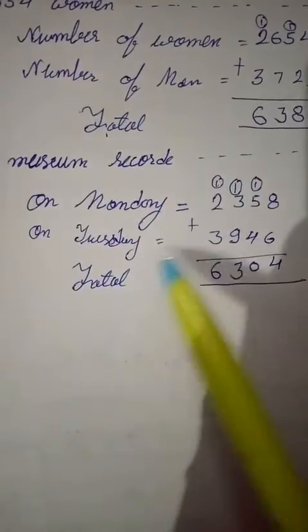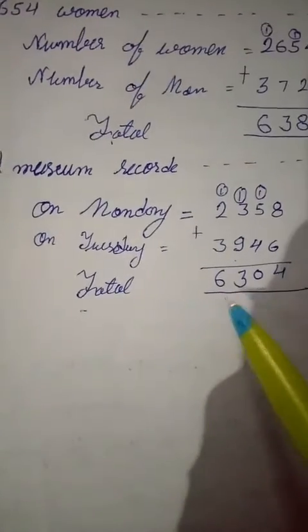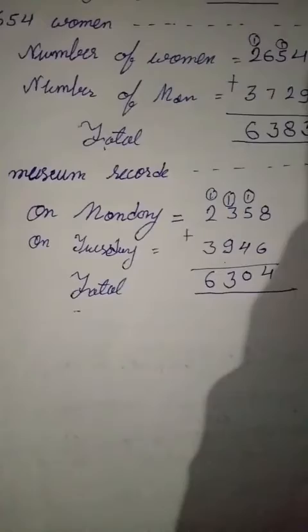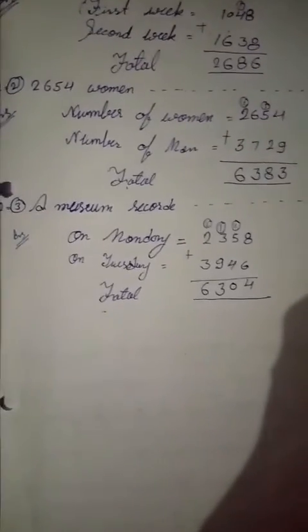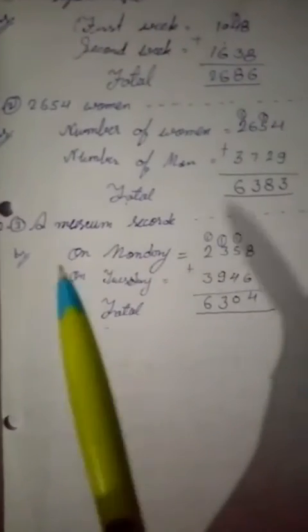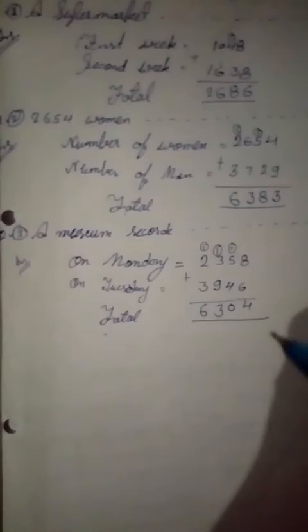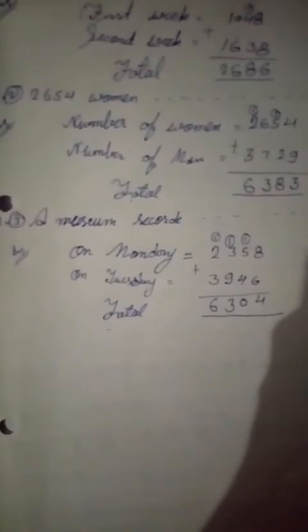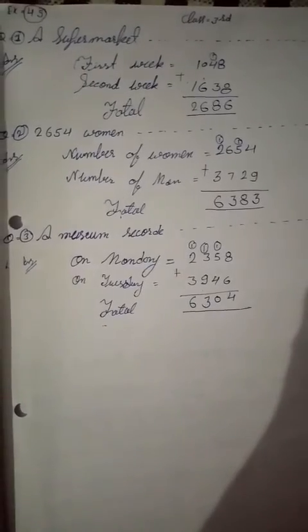Total visitors is 6,304. Complete Question 3. For Question 4, do it yourself using the same method — read the question, write two lines from the statement, then add the numbers. Write down Questions 1, 2, and 3 in your fair notebook, and do Question 4 yourself. We will solve the next question in our next class. Thank you.